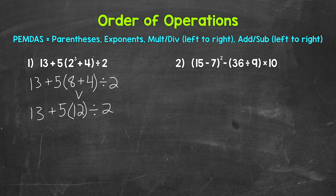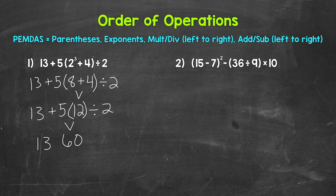So let's continue to work through this problem step by step. Any parentheses? No. Any exponents? No. Any multiplication or division? Yes, we have both — multiplication and division. Multiplication and division are the same priority, so we work from left to right if we have both. So let's do 5 times 12 first. 5 times 12 is 60. Bring down everything we did not use. So 13 plus 60 divided by 2.